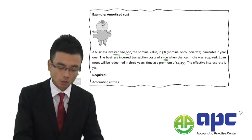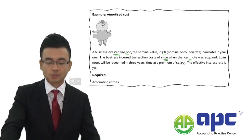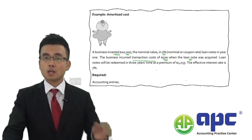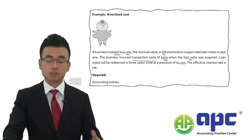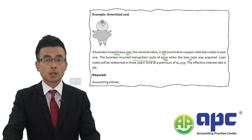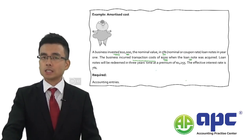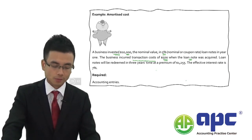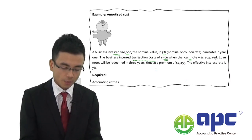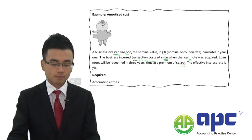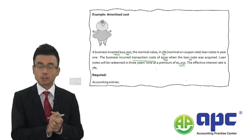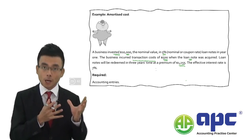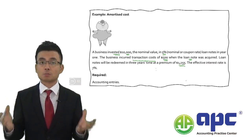It incurred transaction costs of $500 when the long note was acquired. For the amortized cost method, we can't put transaction costs to P&L, so the $500 needs to be capitalized into the financial asset — investment in debt instrument. The long note will be redeemed in three years at a premium of $1,255, meaning at the end of year three you receive $10,000 principal back plus $1,255 premium.